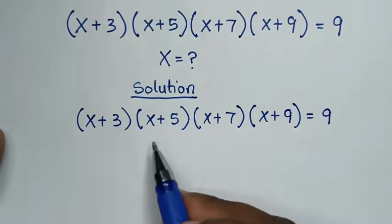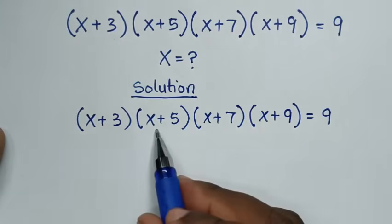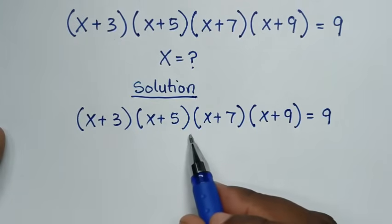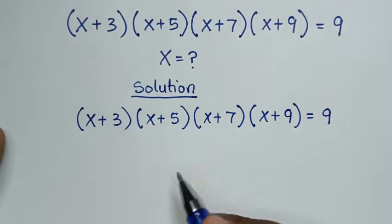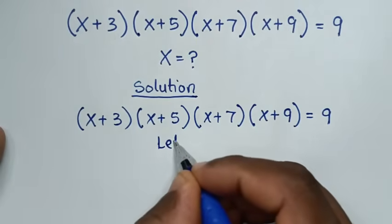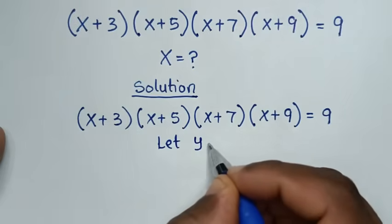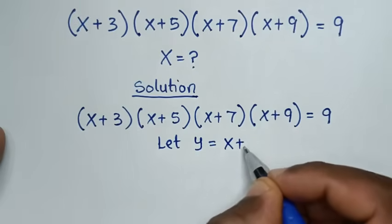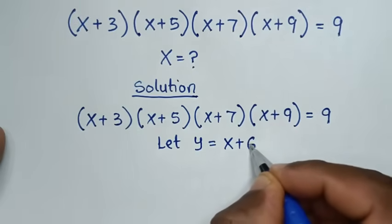Here, in the middle we have x+5 and x+7, so the middle value is x+6. We let y = x+6.